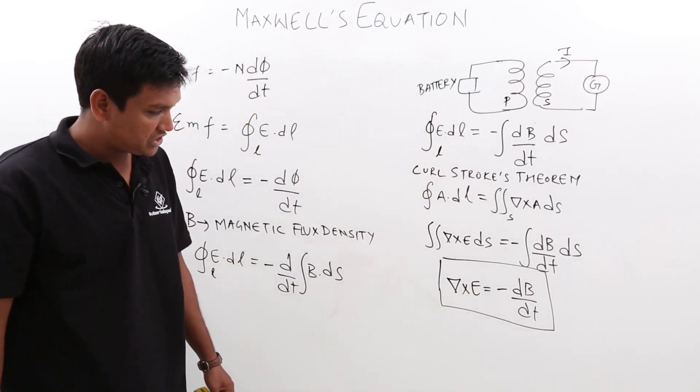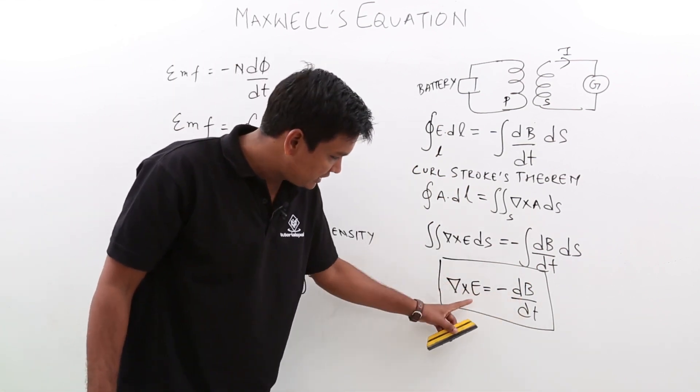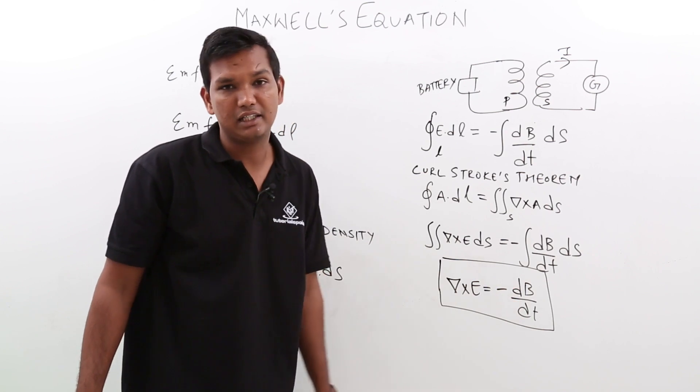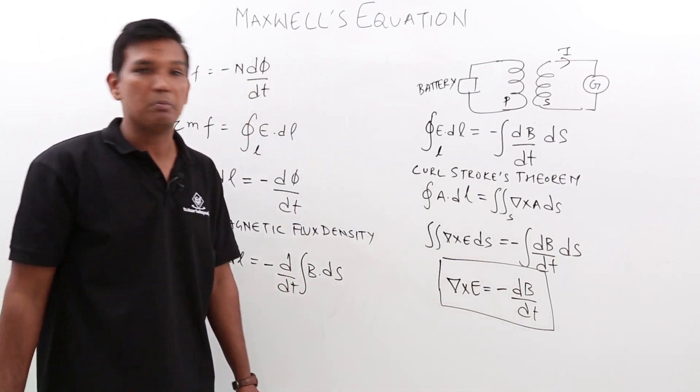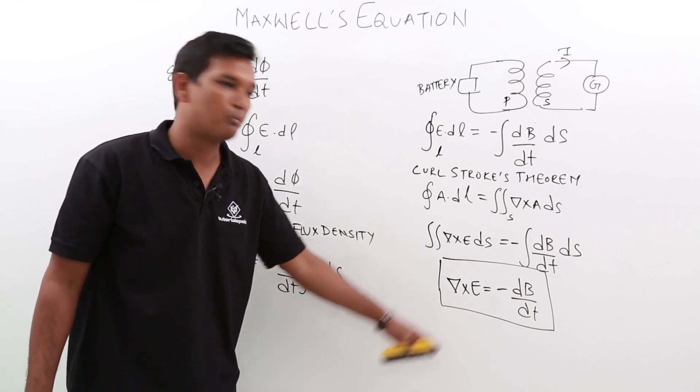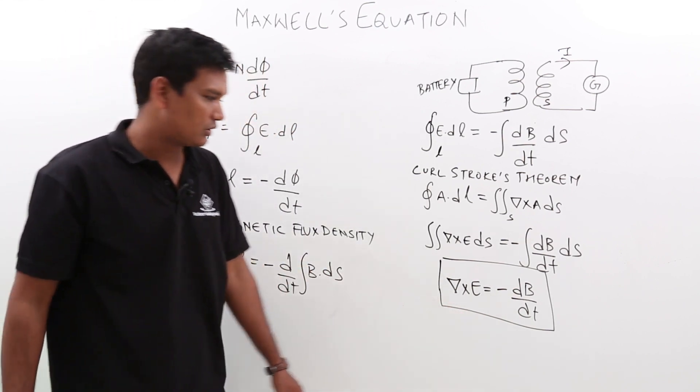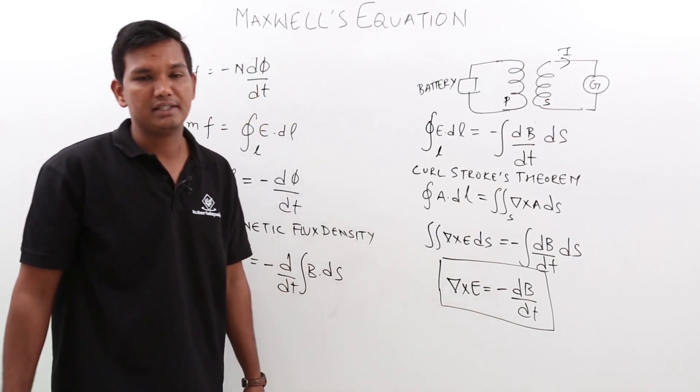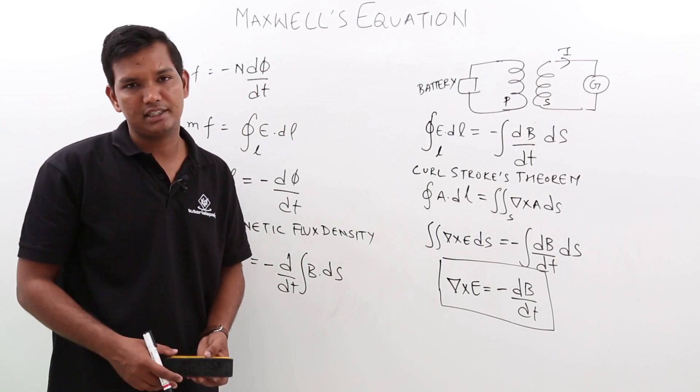This is also very generic to understand that del cross E is giving you, it means the electric field is giving a magnetic field. This we will see more on this when we will try to understand the plane waves. What we have proved is the point form of Maxwell's third equation that is del cross E is equal to minus dB/dt. We will see the Maxwell fourth equation in the next lecture.